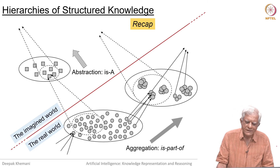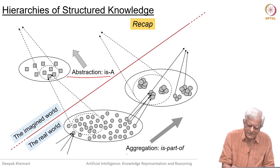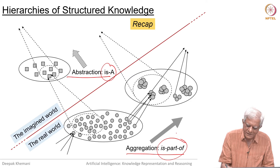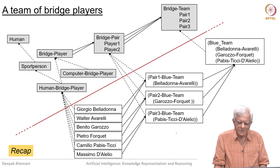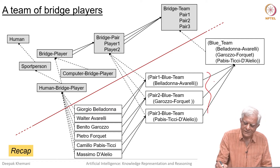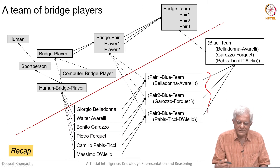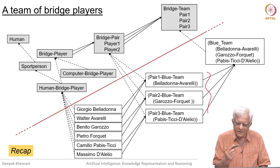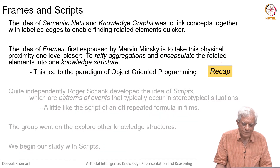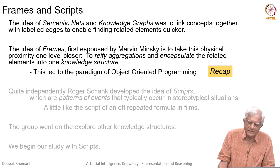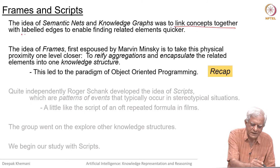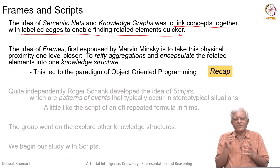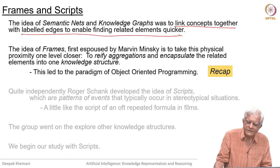We had looked at examples of these hierarchies: the abstraction hierarchy and the aggregation or part-of hierarchies. Abstraction is a taxonomy hierarchy and aggregation is a part-of hierarchy. We saw an example of a bridge team which had six members forming three pairs, and the three pairs formed one team. You could abstract away from them — so they are a bridge branch team and so on. We also looked at semantic nets and knowledge graphs, which link concepts with labeled edges to enable finding related elements quicker. The goal of semantic nets was to make things efficient.